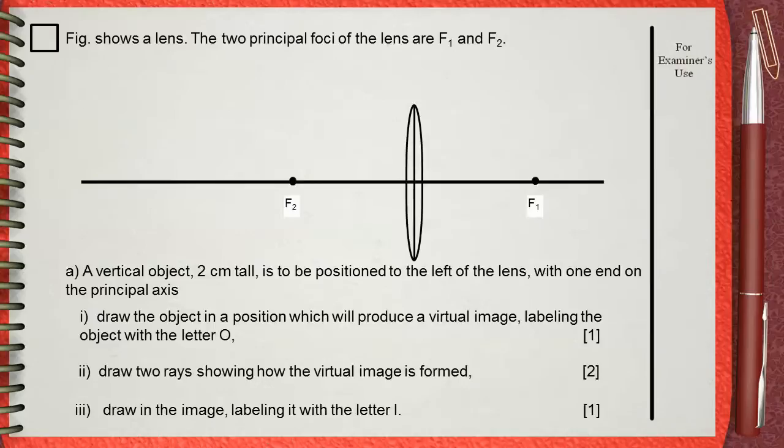Figure shows a lens. The two principal foci of the lens are F1 and F2. A vertical object 2 centimeters tall is to be positioned to the left of the lens with one end on the principal axis.